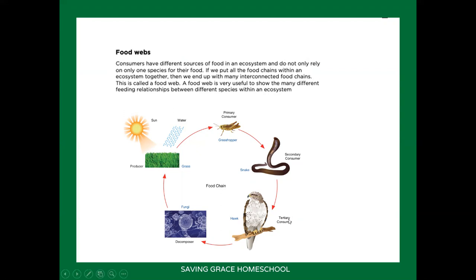If you put many different food chains together, you will have interconnected food chains — and that is called a food web. So this is just one food chain. If something else also eats that grasshopper, for example, then the minute you have more than one food chain, it's called a food web.